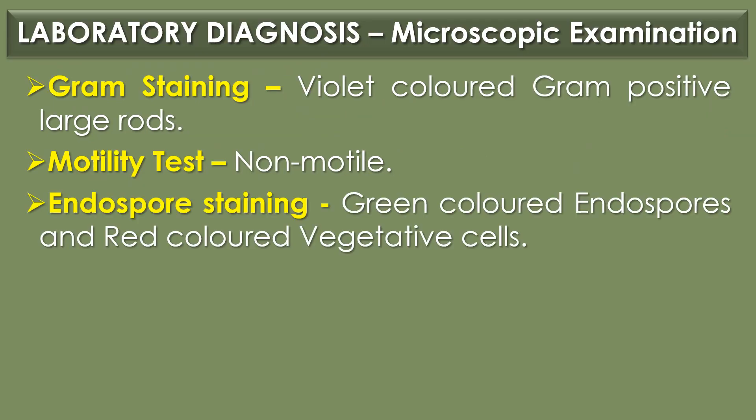Laboratory diagnosis of Bacillus anthracis. The first diagnostic method is microscopic examination. Under gram staining, Bacillus anthracis appears as violet-colored, gram-positive large rods.